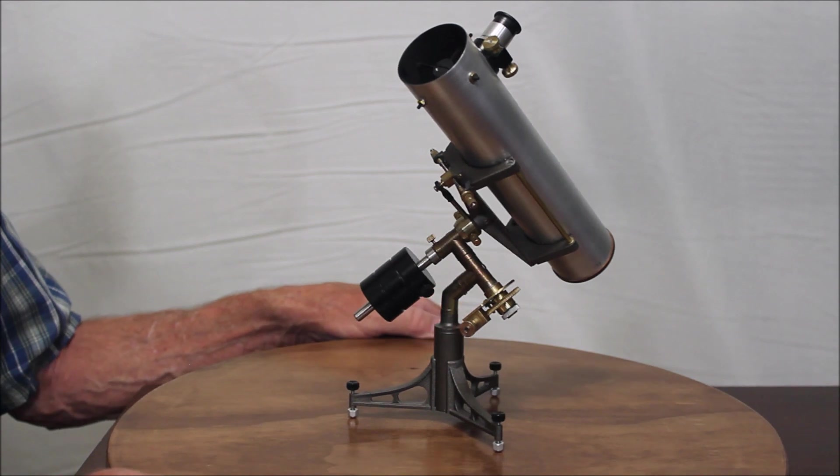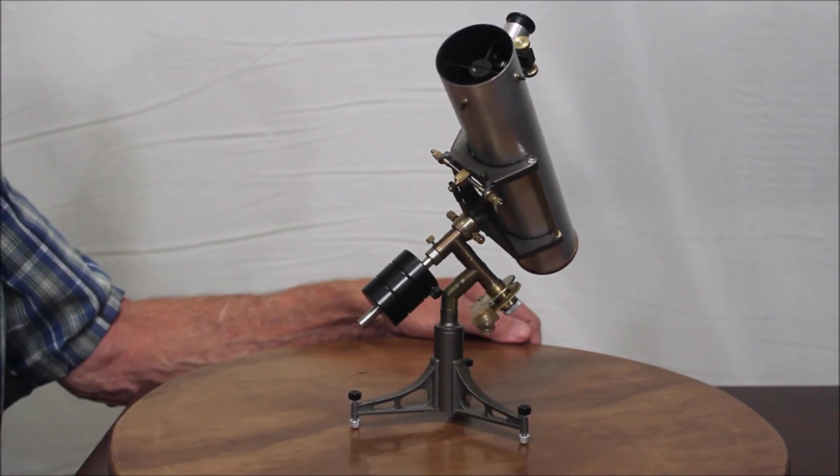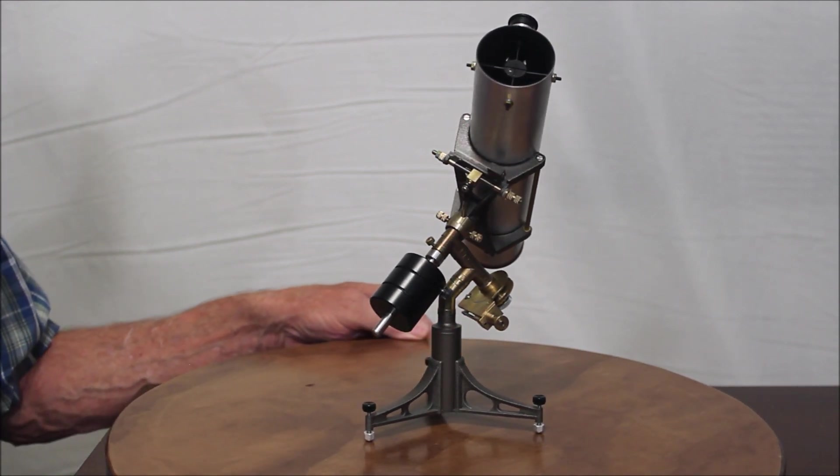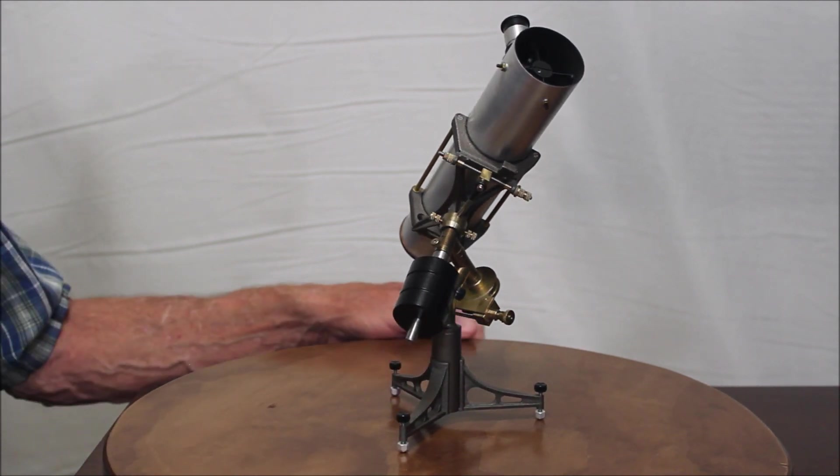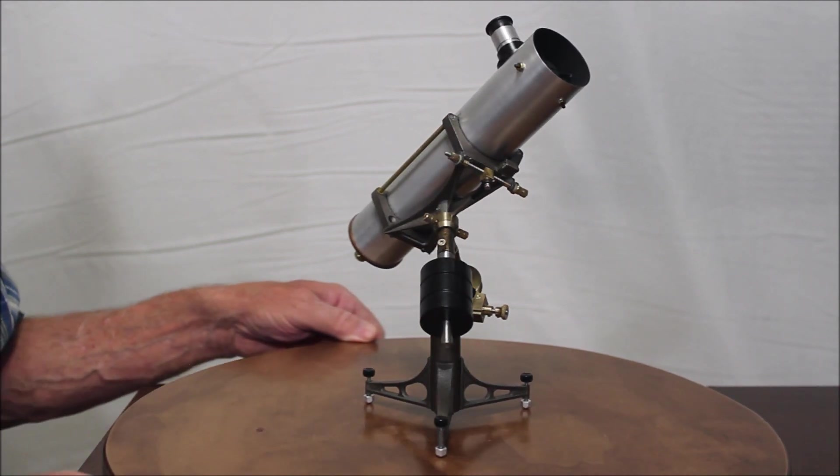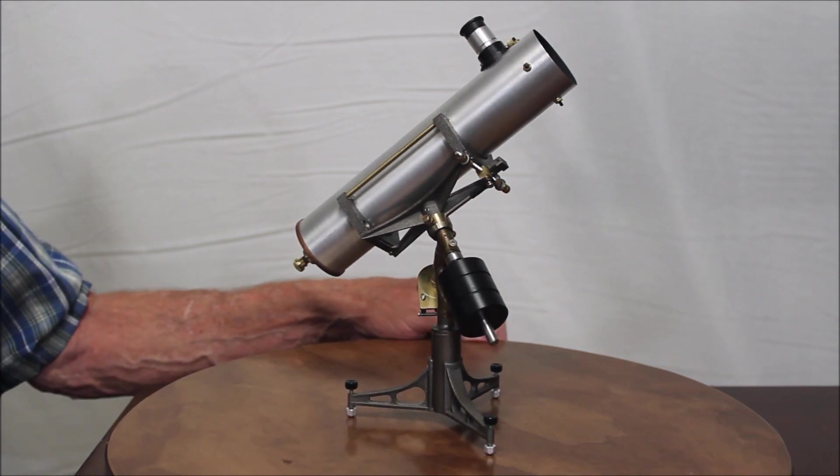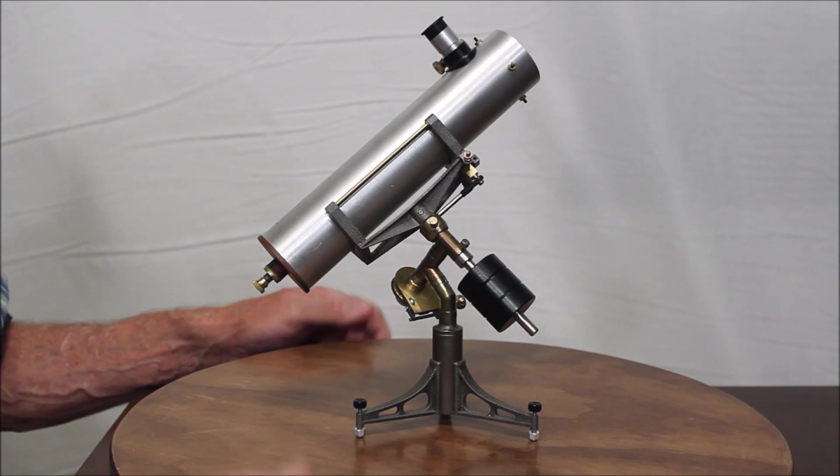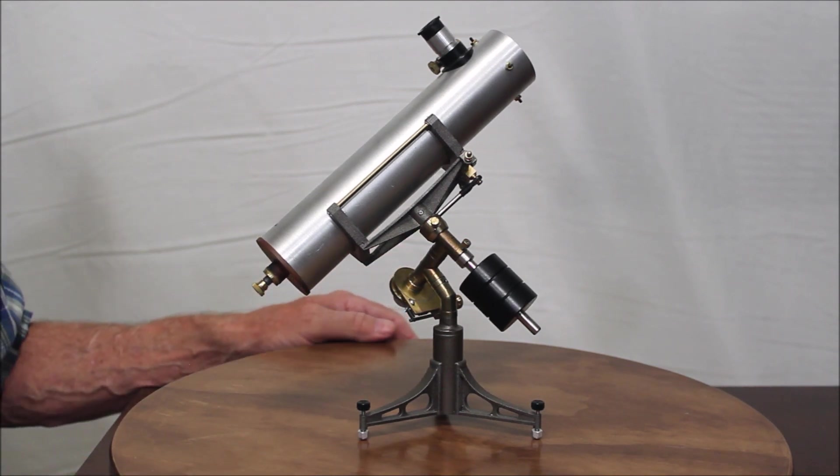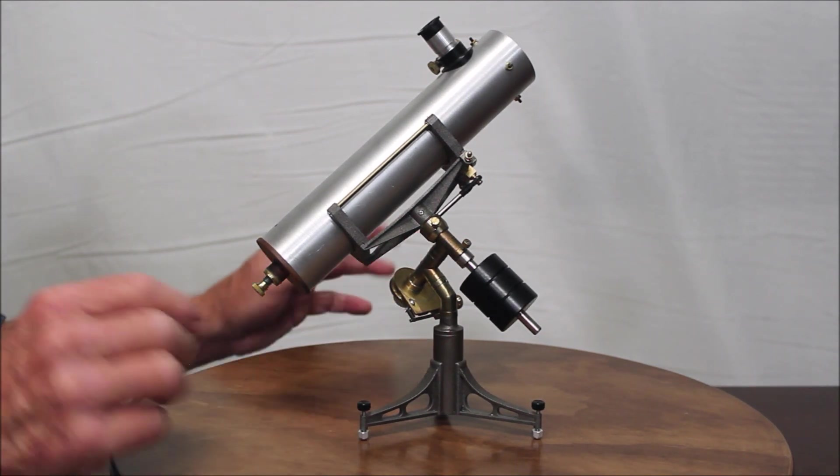By the way this is not really a model. I would consider it to be a miniature telescope. It's fully functional. So it's not really just a model. Like most things that I make are pretty much just models, they have basic operations. This thing is fully functional. It has everything.